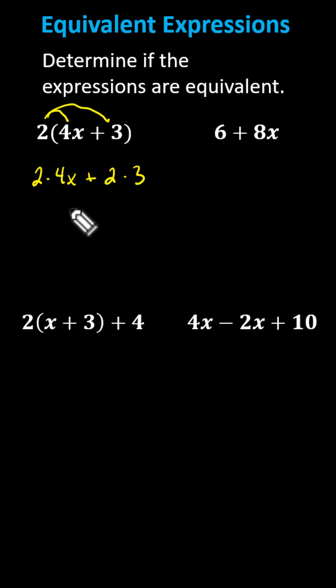Simplifying, 2 times 4x is 8x, giving us 8x plus 2 times 3, which is 6. Comparing this expression to the expression of 6 plus 8x, notice the only difference is the order of the addition, which demonstrates the commutative property of addition. These two expressions are equal, and therefore they are equivalent.